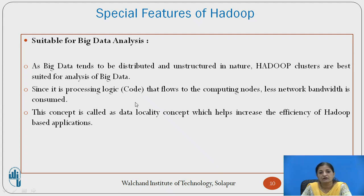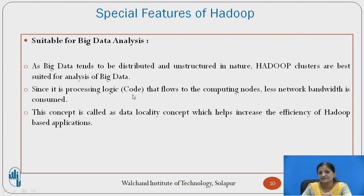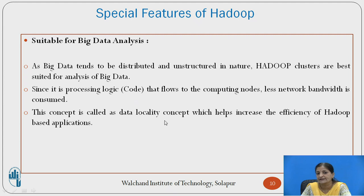The second special feature of Hadoop is moving the code to the data rather than moving data to the code, because the size of the code which processes the data is very small. So it is always efficient to move the code to the computing nodes, and less network bandwidth is consumed because network traffic is also very less. This concept of moving the code to the data is called the data locality concept, and it helps in increasing the efficiency of Hadoop-based applications.